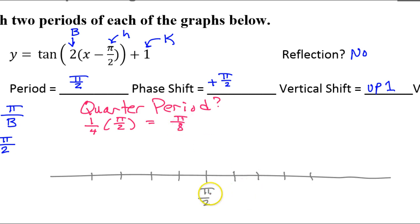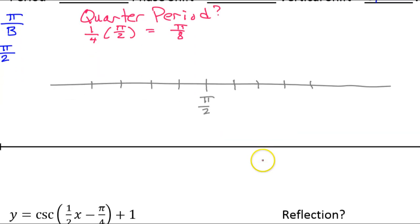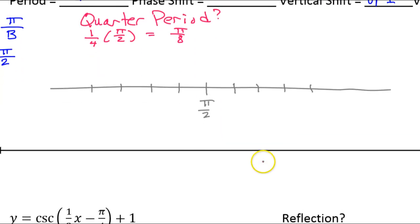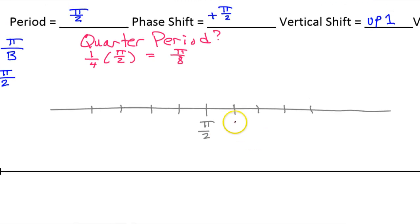So I should be able to add π over 8 to this in order to get the next value. Oh, look, there was already an x-axis there. I did not realize that. Oh, well, I'm just going to use this x-axis. So I'm going to add, I need to add π over 8 to get the next value. But I need like denominators, of course. So I'm going to go ahead and multiply this guy by 4. So what I really have, then, is 4π over 8. And I'm adding 1π over 8.